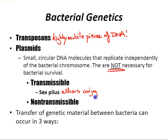Non-transmissible plasmids do not contain the genes for synthesis of the sex pilus and cannot be transmitted via conjugation. Plasmids code for genes that enhance bacterial survival — this is where you get antibiotic resistance, resistance to heavy metals, resistance to ultraviolet light, pili or fimbriae mediating adherence to host cell surfaces, and also exotoxins.